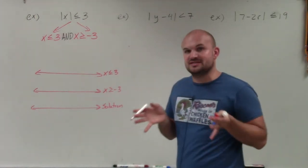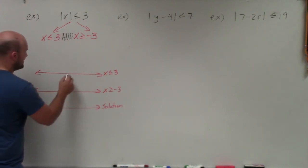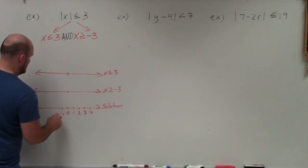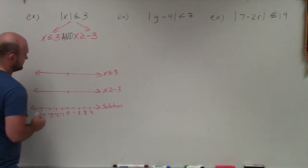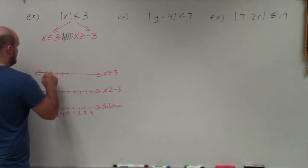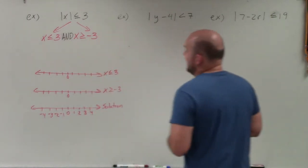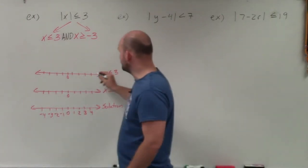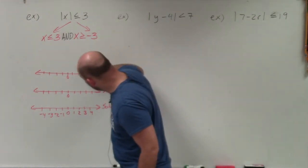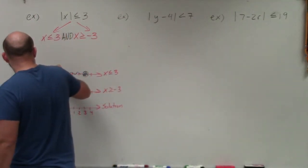I'll use the same spacing and tick marks on my number lines, with 0 here, going up to 4 and down to negative 4. To graph x is less than or equal to 3, I go to positive 3 and make a nice big closed point — since it's less than or equal to, that's a closed point. Then x is less than 3 means all the values to the left, with an arrow continuing in that direction.